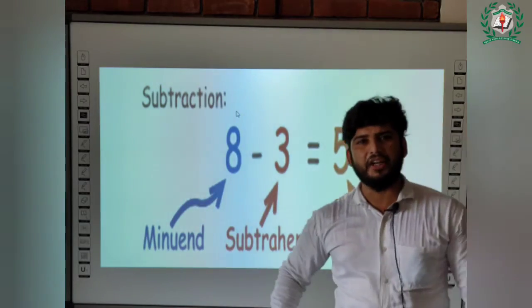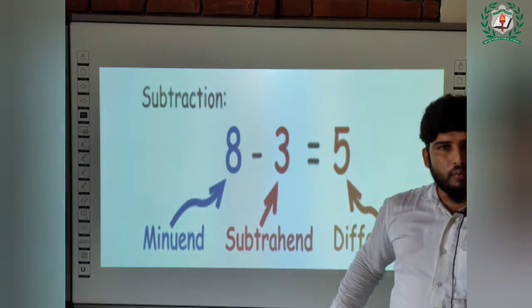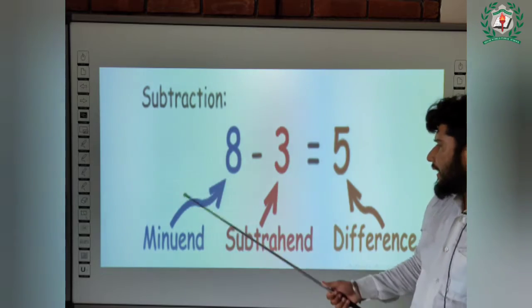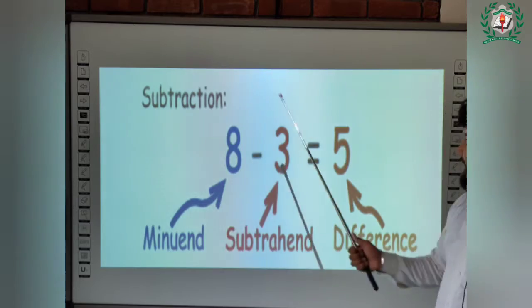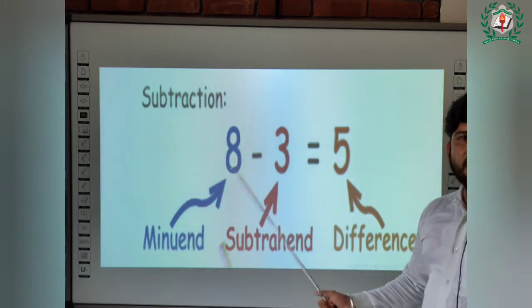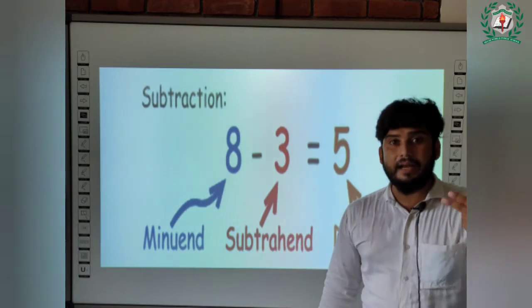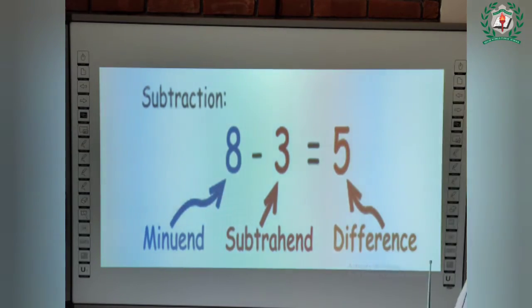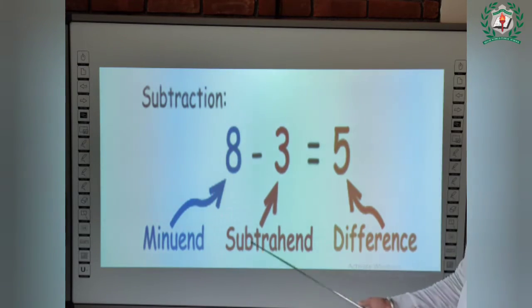In subtraction we have three parts: minuend, subtrahend, and difference. The first number is the minuend, the second number is the subtrahend, and the third number, which is the answer, is the difference. Just remember it.